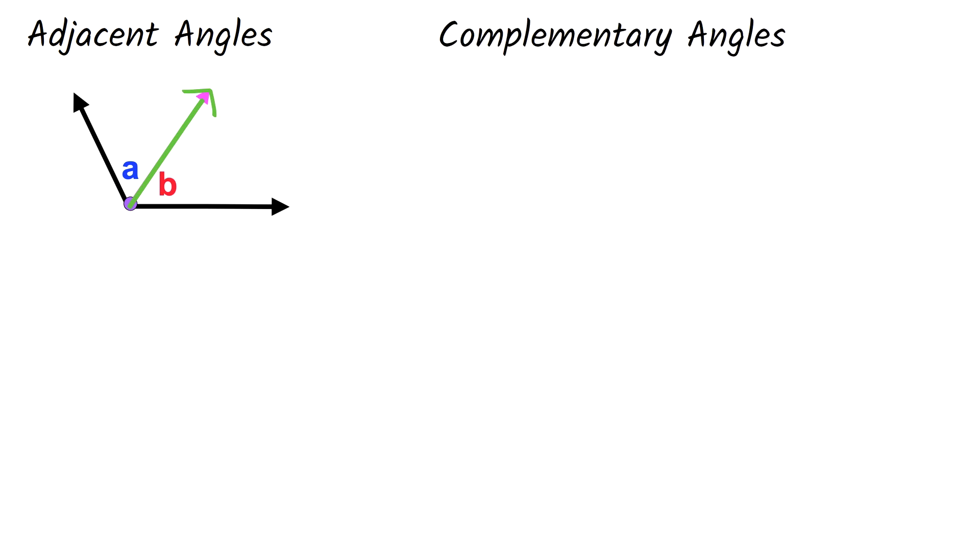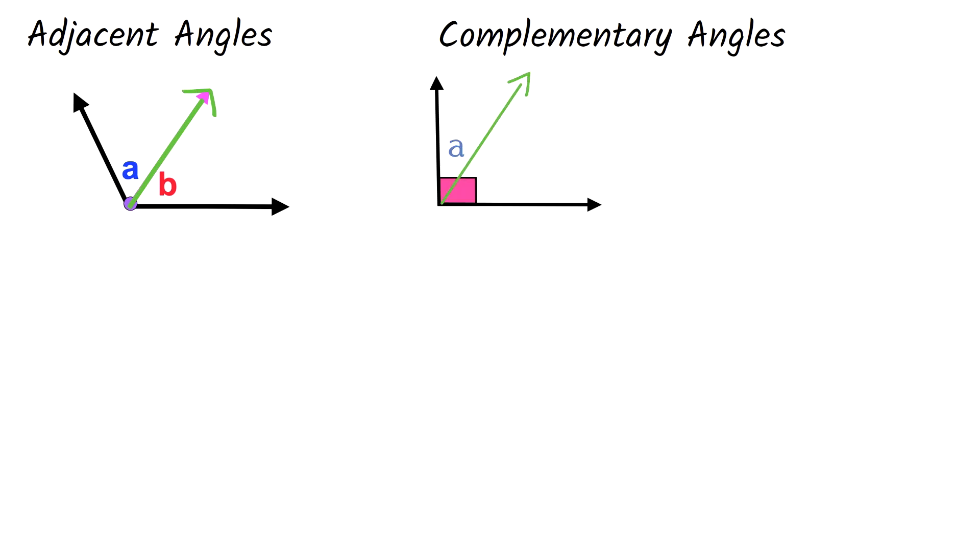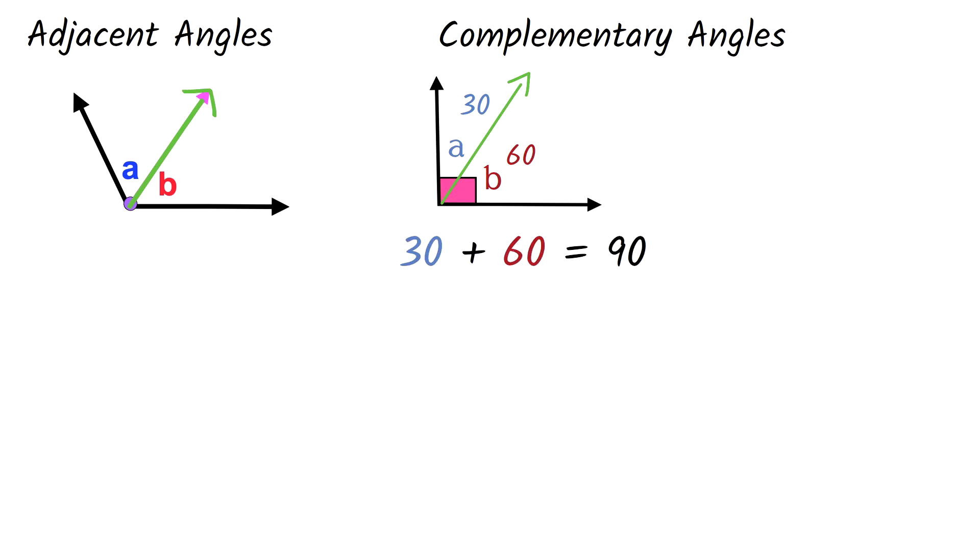Complementary angles are angles that add up to 90 degrees. Let's say you have this 90 degrees angle. For example, we know it's 90 degrees because of this mark here. And you divide it into two with this line. The angles formed, angle A and angle B, will be complementary. So let's say angle A is 30, then angle B will be 60. 30 plus 60 equals 90, so the angles are complementary.